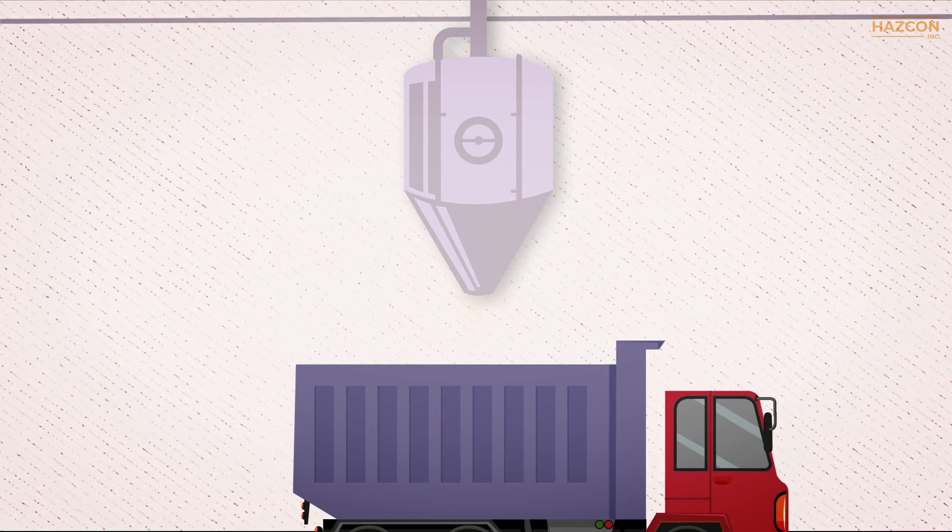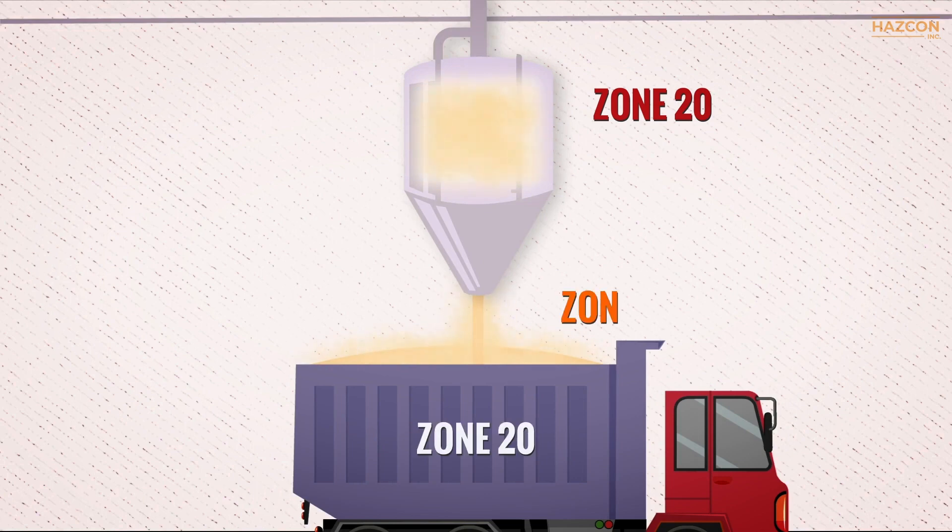To make it easy to distinguish among the three zones, consider this diagram of a typical dust handling plant. The areas classified as Zone 20, Zone 21, and Zone 22 have each been identified.